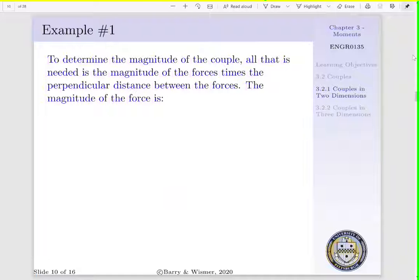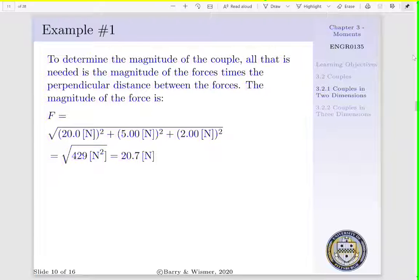To determine the magnitude of the couple, all that is needed is the magnitude of the force times the perpendicular distance between our forces. The magnitude of our force is F equals the square root of (20.0 N)² plus (5.00 N)² plus (2.00 N)², which equals the square root of 429 N², or the magnitude of our force is 20.7 newtons.